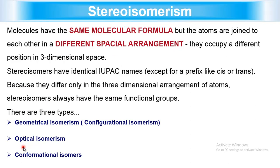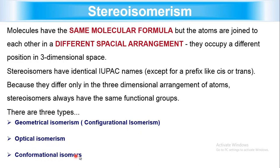Next is stereoisomerism. Stereoisomers have the same molecular formula and atoms joined in the same connectivity, but differ in the spatial (three-dimensional) arrangement of atoms. Stereoisomers have identical IUPAC names except for prefixes such as cis or trans, and always have the same functional group. They are majorly divided into three types: geometric isomerism (also called configurational isomerism), optical isomerism, and conformational isomerism.